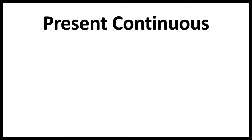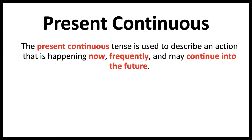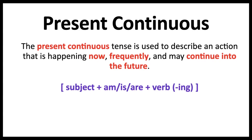Present continuous. The present continuous tense is used to describe an action that is happening now, frequently, and may continue into the future. The present continuous tense uses the following structure: subject plus am, is, or are, plus the verb ending in -ing.